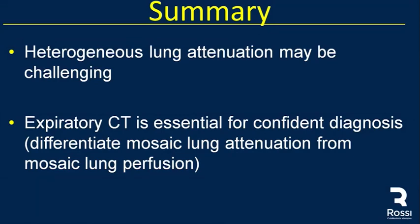In summary, heterogeneous lung attenuation may be challenging. The most common causes are airway disease. Expiratory CT is essential for confident diagnosis, mainly to differentiate mosaic lung attenuation from mosaic lung perfusion. In day-to-day practice, we use expiratory CT in cases of lung transplant, collagen vascular disease, inhalation, asthma, and suspected hypersensitivity pneumonitis. Low-dose expiratory CT provides much more confidence in our diagnosis.